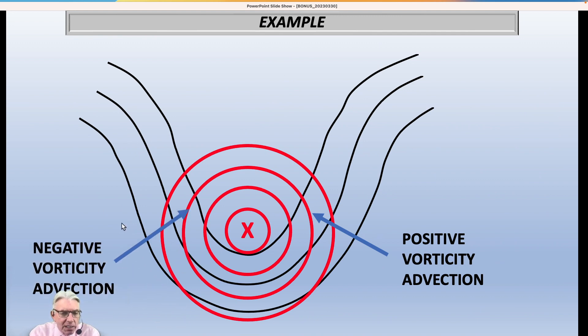Over on the other side, it's exactly the opposite, where we're advecting negative values or less positive values, let's put it that way, along in the flow. And so this is an area that we call negative vorticity advection.